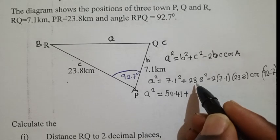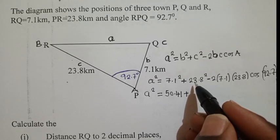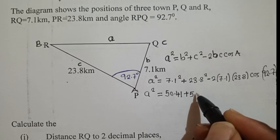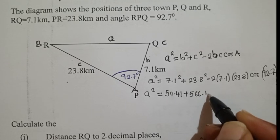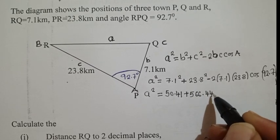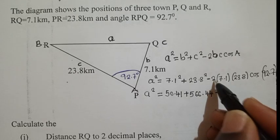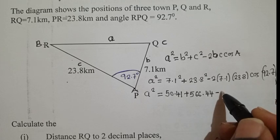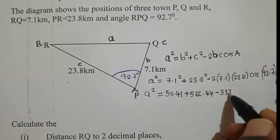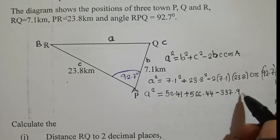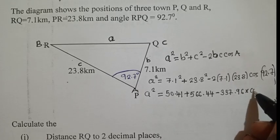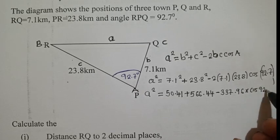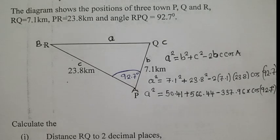Then plus 23.8². This will give us 566.44. Then we say minus. We multiply 2 times 7.1 times 23.8. This will give us 337.96. We say times cos 92.7 degrees. That's our angle.